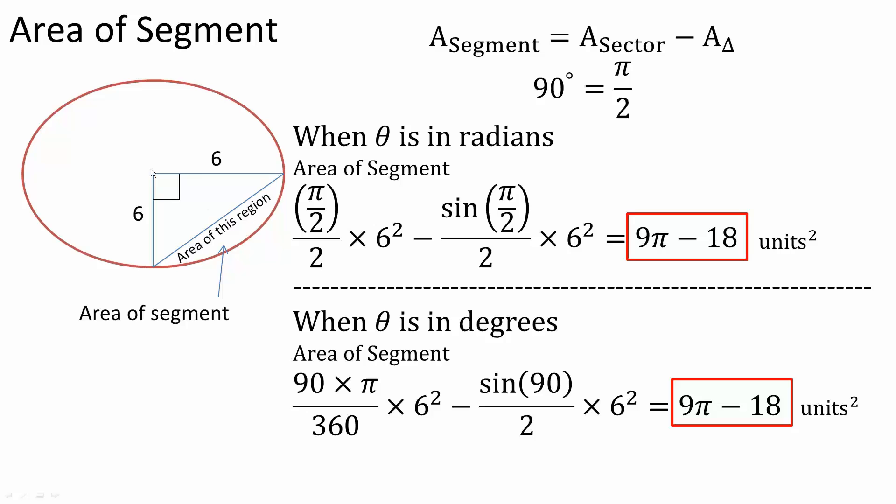So in this particular problem, we have the radius of 6, we have 90 degrees. And we want to know what is the area of the segment right here. So we want to know what is the area of this region. And because of this problem, I have 90 degrees, I also know that it's equal to pi over 2. Pi over 2 is equivalent to 90 degrees. So I can solve it both ways.